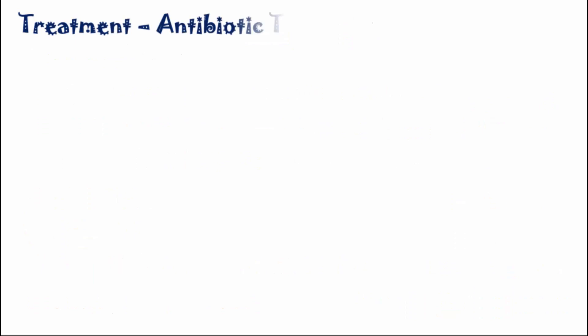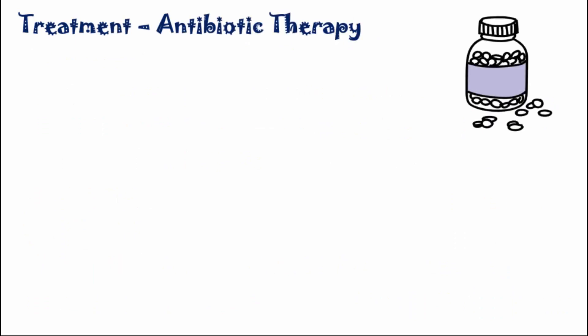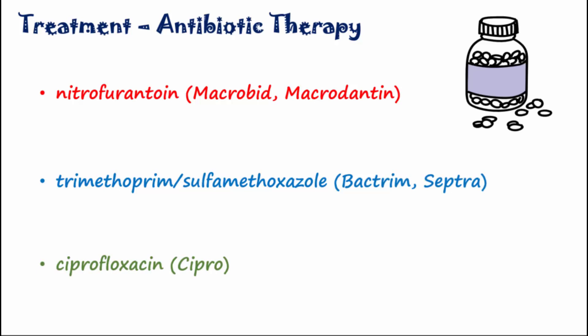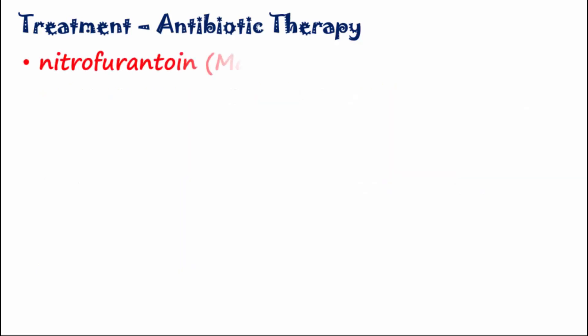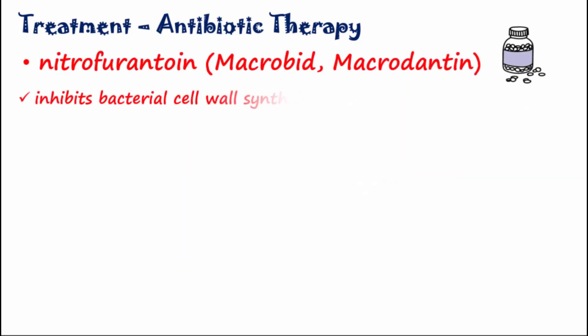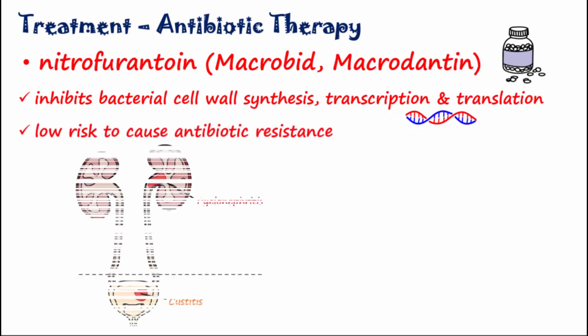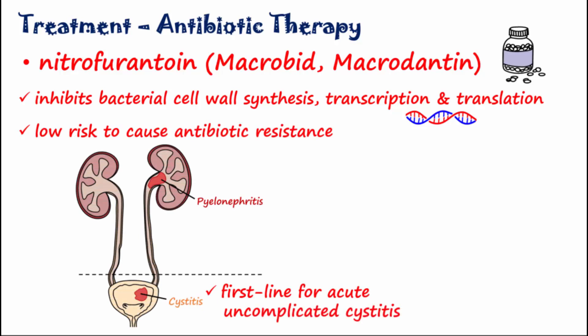Three important antibiotics often used to treat UTIs include nitrofurantoin, trimethoprim-sulfamethoxazole, and ciprofloxacin. Nitrofurantoin acts to inhibit bacterial cell wall synthesis as well as bacterial transcription and translation. It has a low risk of causing antibiotic resistance and is first-line antibiotic treatment for acute uncomplicated cystitis. It is less effective for pyelonephritis due to low blood levels and low tissue penetration.